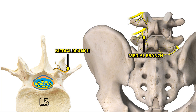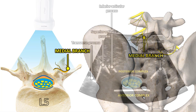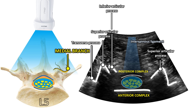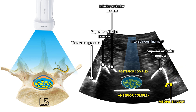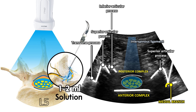Therefore, when this approach is performed, we must inject on the medial branch of the same level and the one above. The medial branch flips over the angle described by the articular and transverse processes on each side. The approach will be performed in-plane, from lateral to medial, on the same level and the one above, with one to two milliliters of local anesthetic.